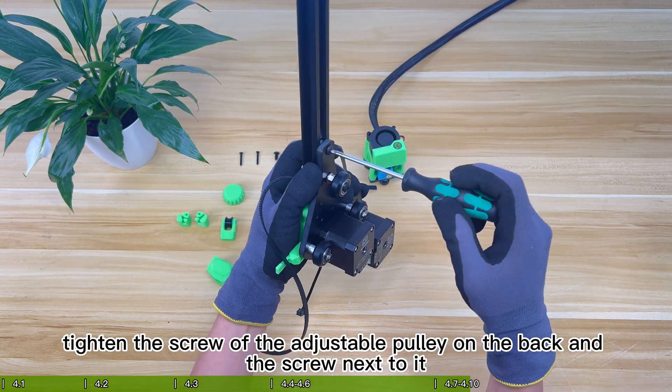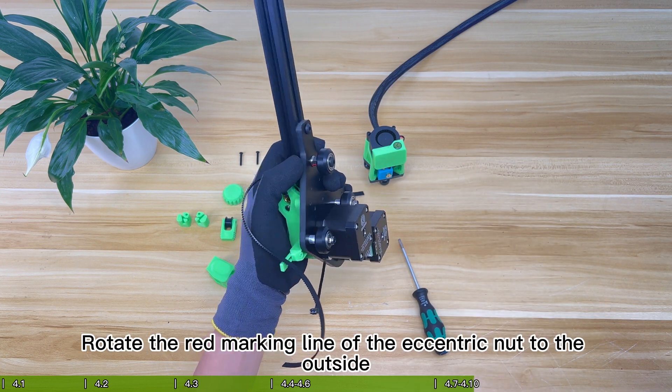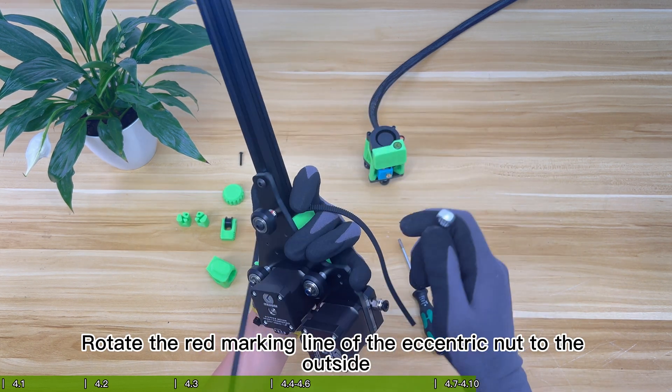Tighten the screw of the adjustable pulley on the back and the screw next to it. Rotate the red marking line of the eccentric nut to the outside.